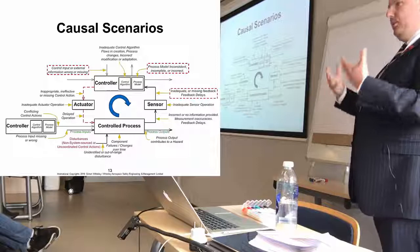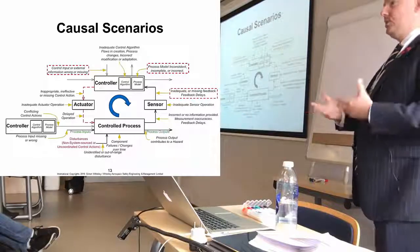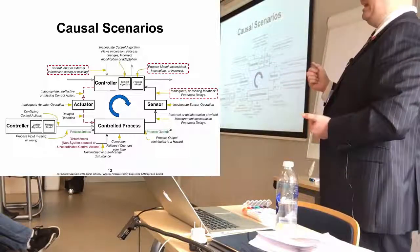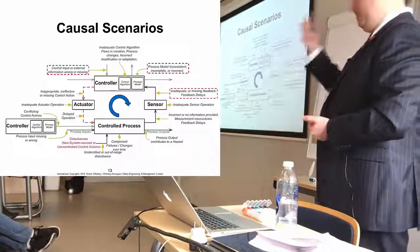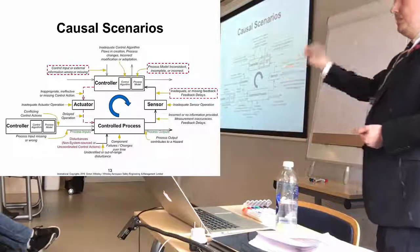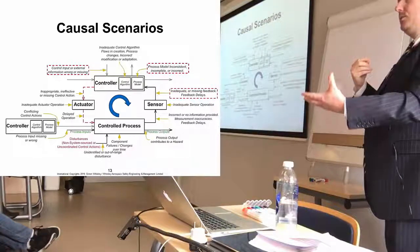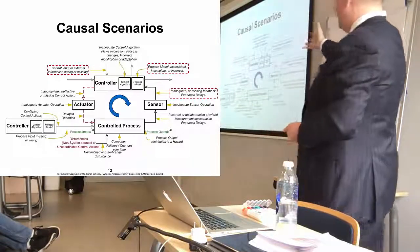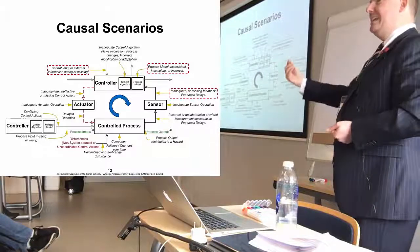And that process model helps you to decide what actions, what control actions you need to take. And obviously in the case of somebody stepping out in the road in front of you, if you don't detect that, your process model will not have that person within it, and so you won't take the control action to stop the car. So how could your process model not have that person in it?